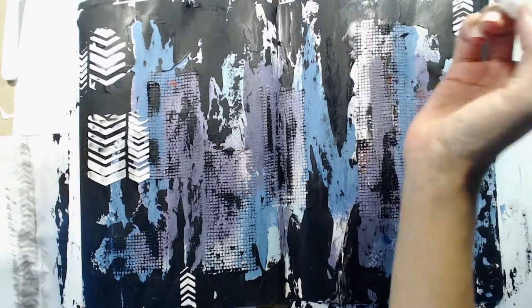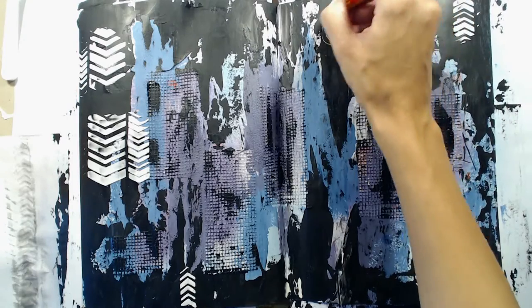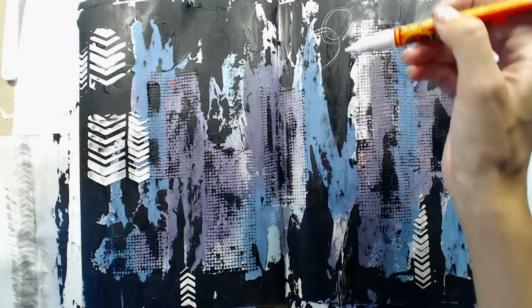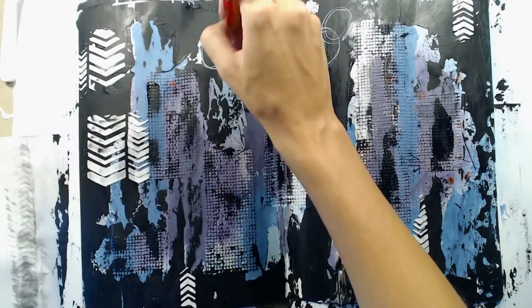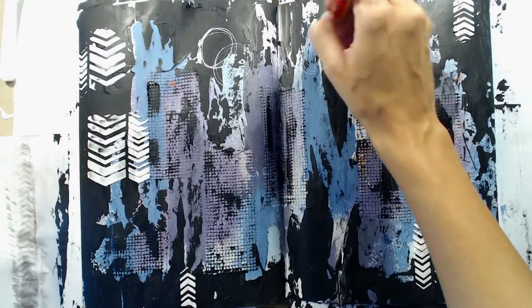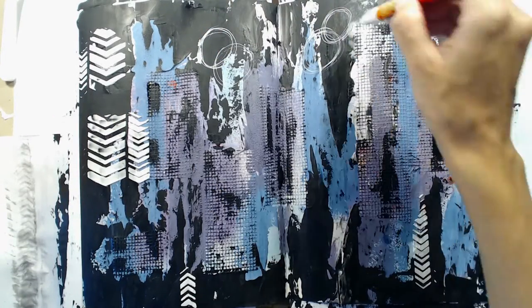Then as a final touch, I wanted to add some more white to the page and I used my white Molotov marker to add some random text and doodles all over the spread. This gave the page some highlights and made it less dark and depressing.